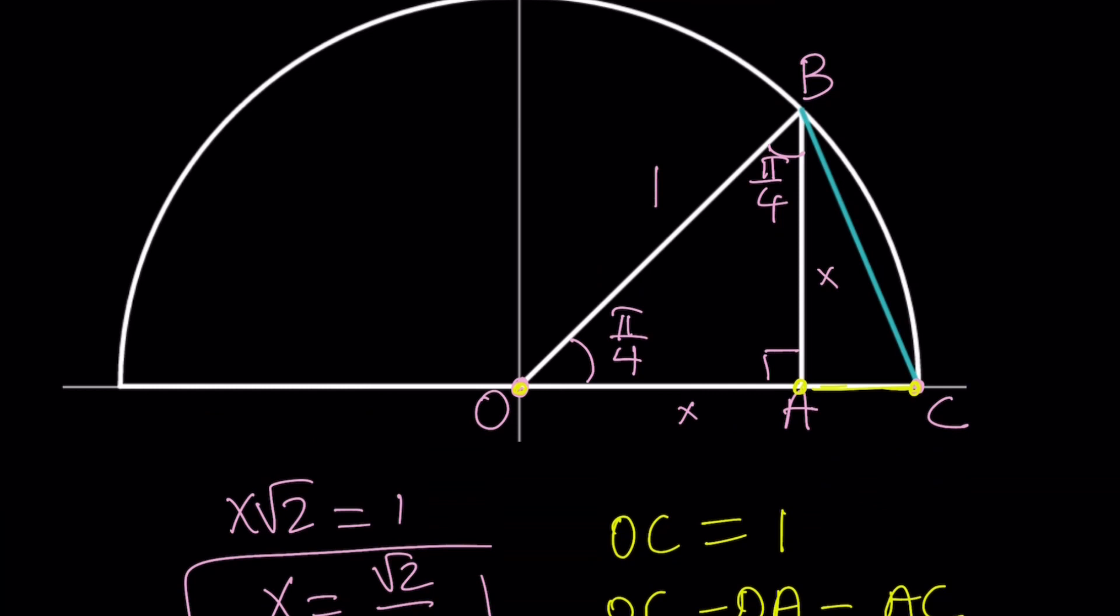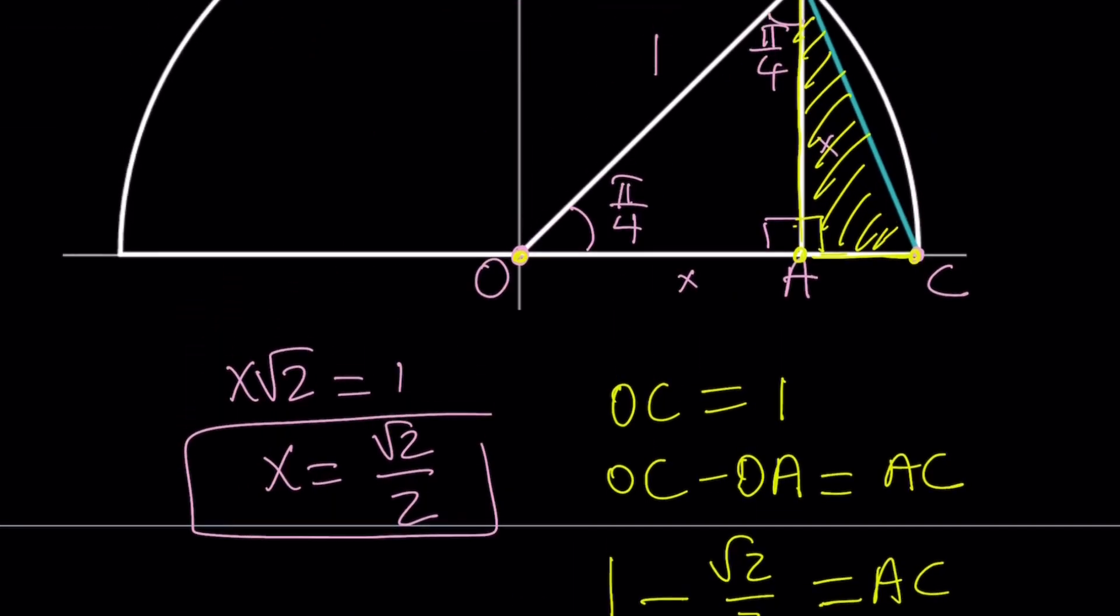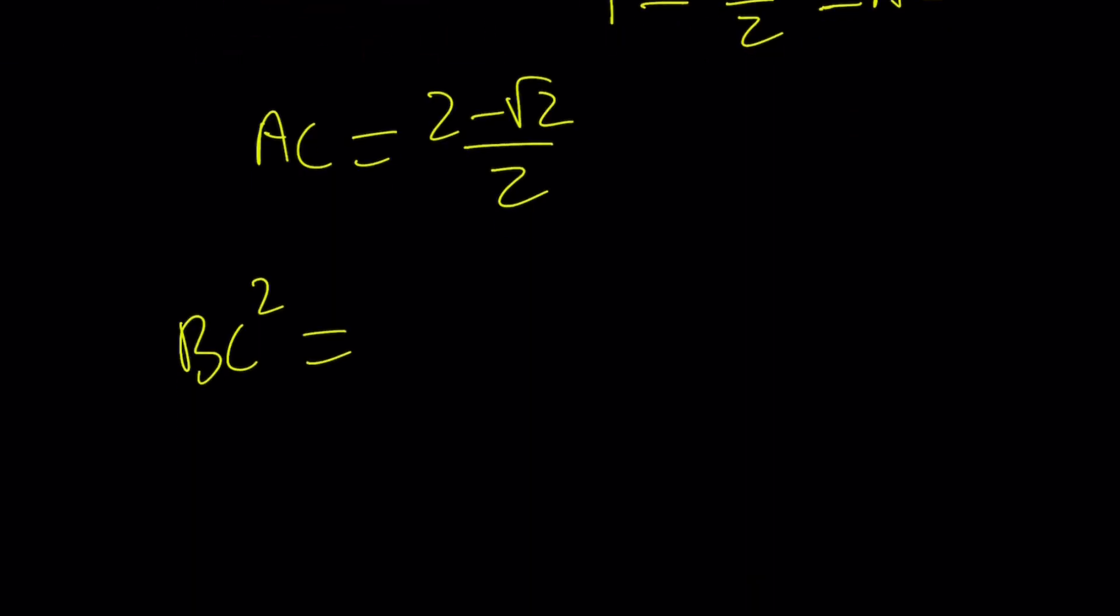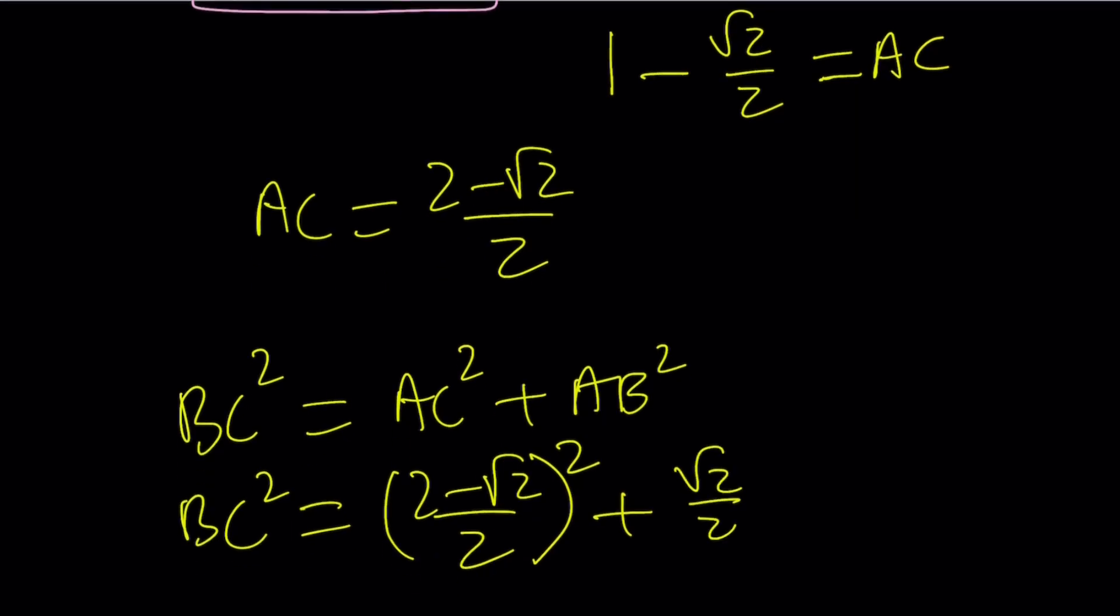So now I have AC. And then I have AB. And notice that this is a right triangle. Because it is 90 degrees. So I can find BC by using Pythagorean theorem again. BC² is equal to AC² plus AB². So BC² can be written as AC. I know it's 2 minus √2 over 2. 2 minus √2 over 2. Plus. And AB is X, which is √2/2. But I need to square that.